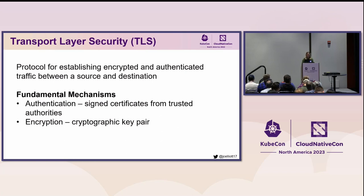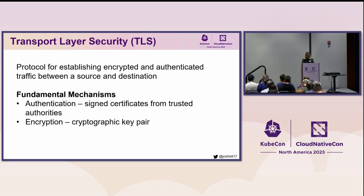The last major component of PKI authentication and encryption is the Transport Layer Security protocol. This protocol describes the exchange of TLS certificates and cryptographic keys between entities. One of the most common implementations of TLS with an application-level protocol is HTTPS, where the S is TLS. The fundamental mechanisms for authentication and encryption are achieved through signed certificates from trusted authorities and through cryptographic key pairs, which play a part in creating digital signatures, verifying those signatures, and establishing future communications.